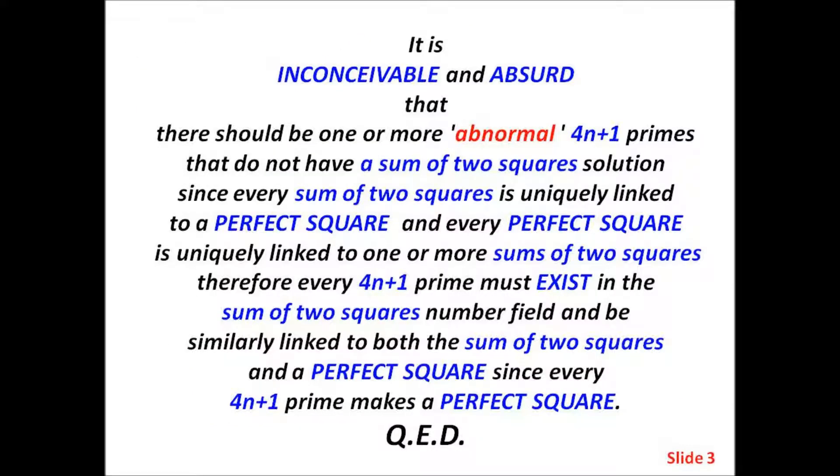It is inconceivable and absurd that there should be one or more abnormal 4n plus 1 primes that do not have a sum of two squares solution, since every sum of two squares is uniquely linked to a perfect square and every perfect square is uniquely linked to one or more sums of two squares.